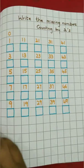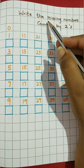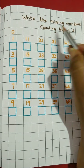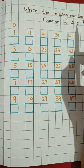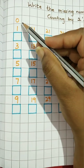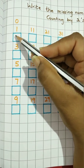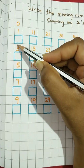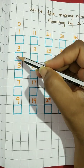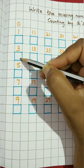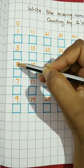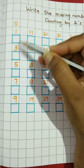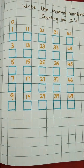Now we will do one more activity — write the missing numbers counting by twos, that is skip counting by twos. So zero, one — and what number will come here? Two. Then skip three — what number comes next? Four. Skip five: six. Complete this till fifty.